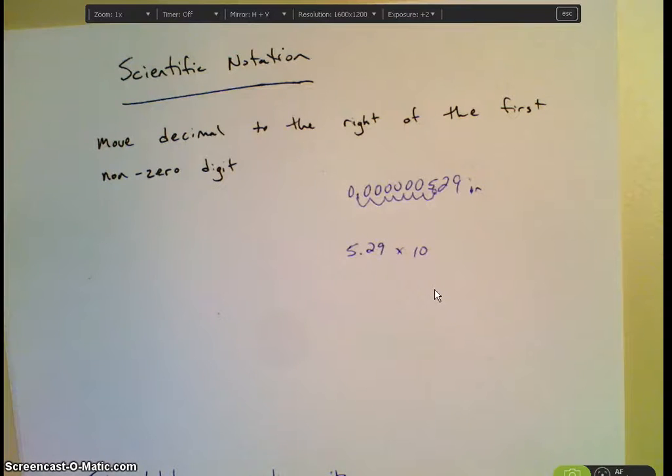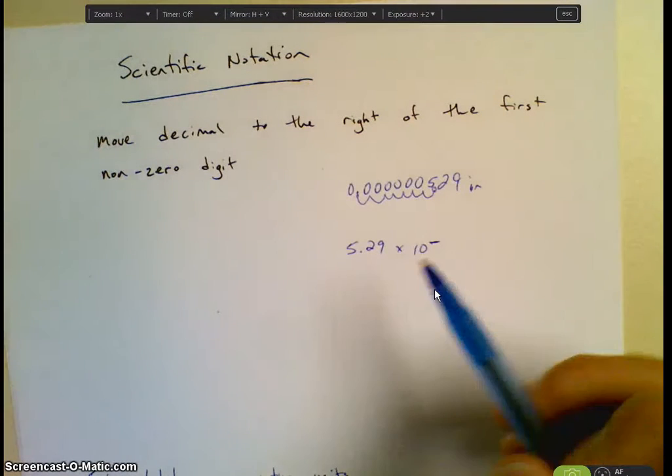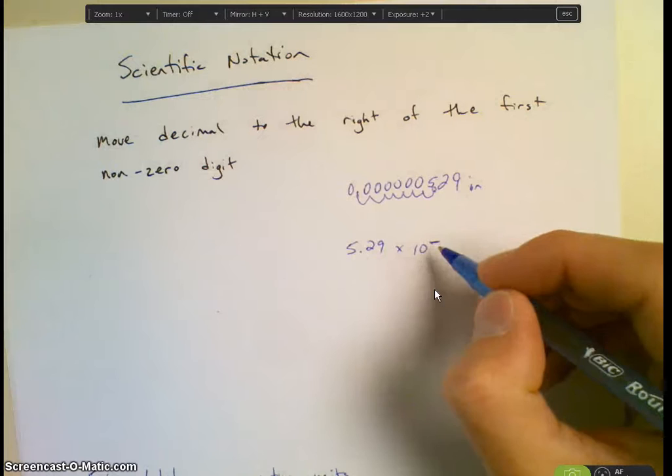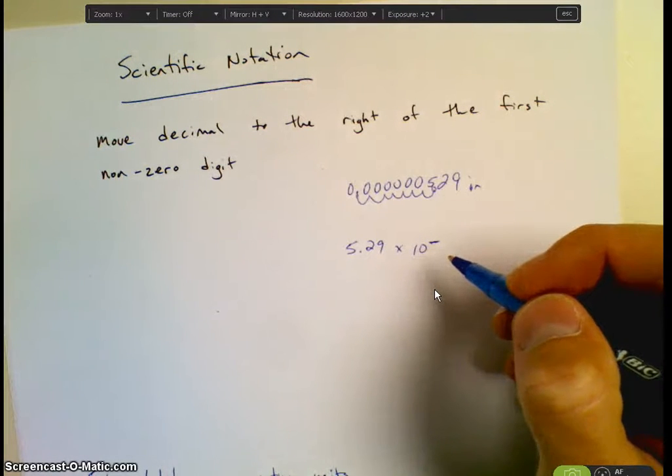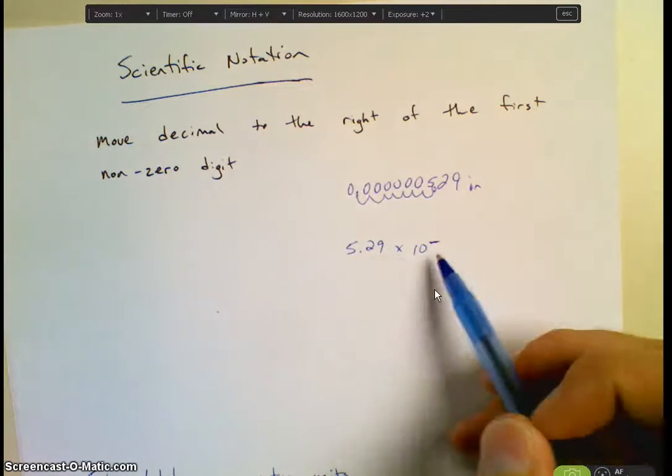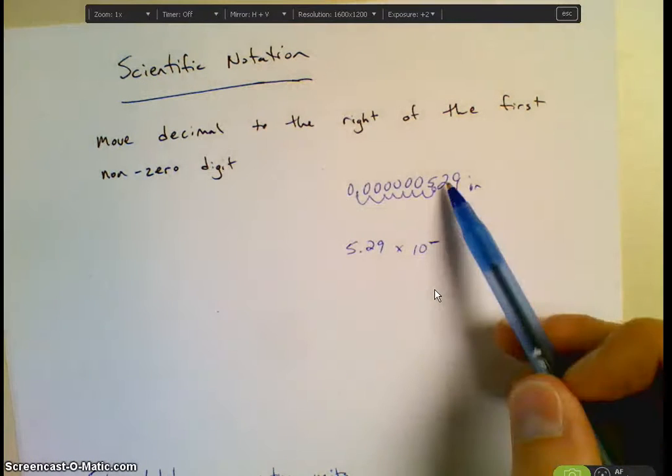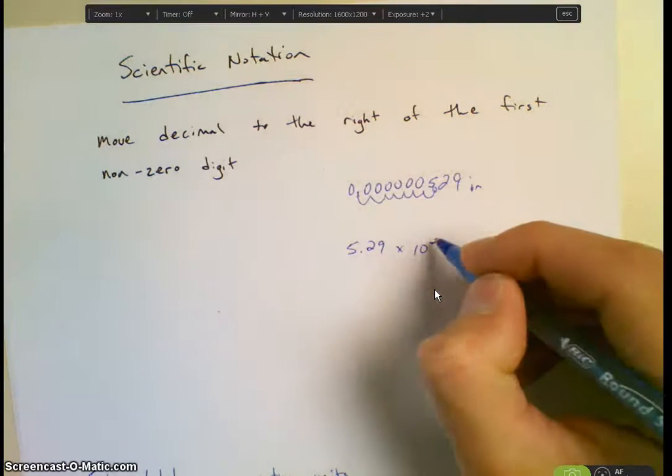So our number would then be 5.29 and then times some exponent multiplier. And in this case, it's going to be times 10 to the what exponent? If we did, I heard 7. If we put a 7 there, is 10 to the 7th a very big number or a very small number? A big number. So if I take 5.29 and multiply it by a very big number, it makes it even bigger. But this number here was smaller than this. So I need to multiply by a negative exponent.